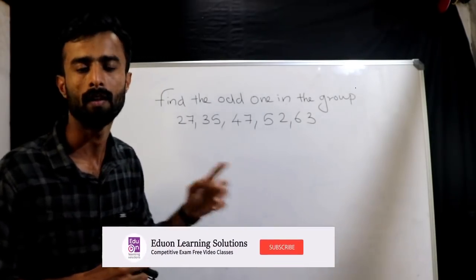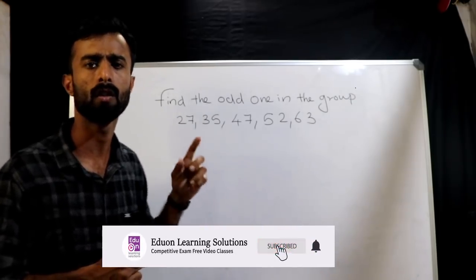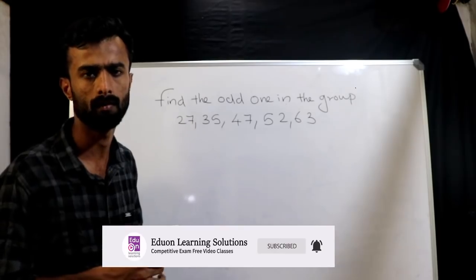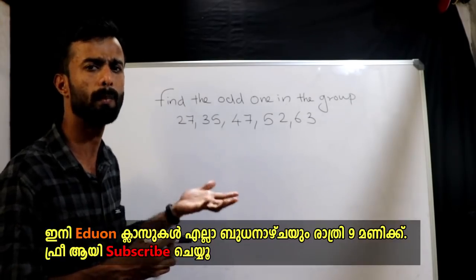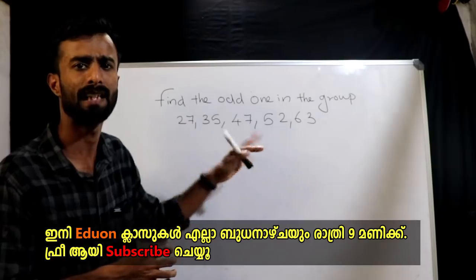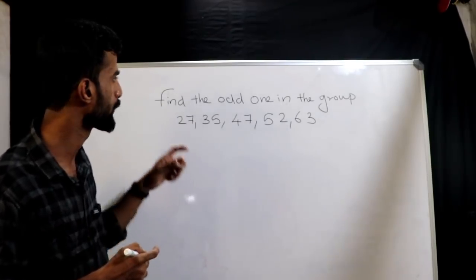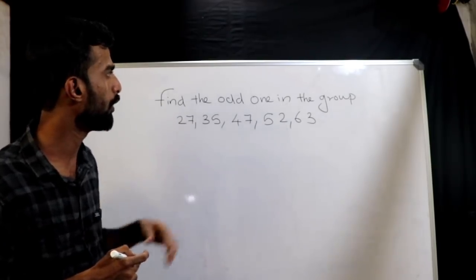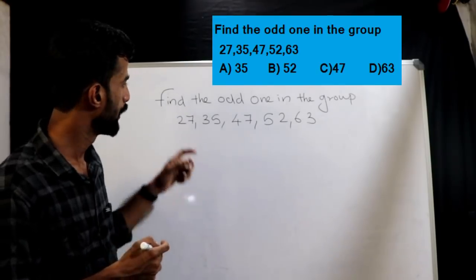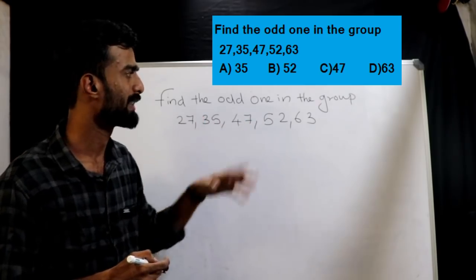Question number one: we have a direct question from the last exam in 2015. In the exam, we will have about 10 questions. Find the odd one in the group. We also have numbers on the screen: 37, 35, 47, 52, 63.